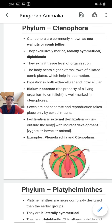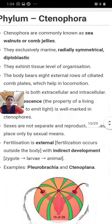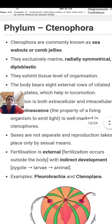We start with Ctenophora. The phylum Ctenophora is commonly known as sea walnuts or comb jellates. Members of Ctenophora are commonly known as sea walnuts or comb jellates.